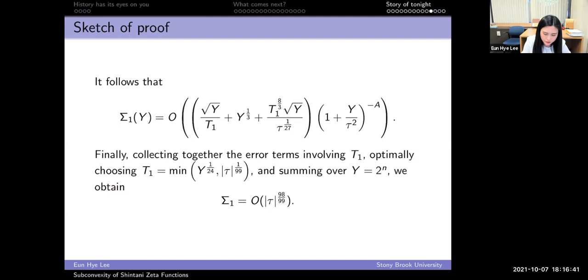We choose optimally T_1 to be minimum of Y^(1/24) and τ^(1/99). Then summing over Y equals 2^n, we get Σ_1 = O(τ^(98/99)).